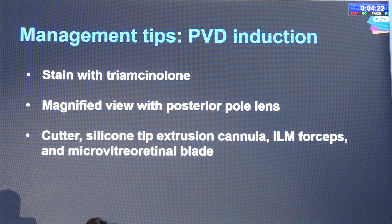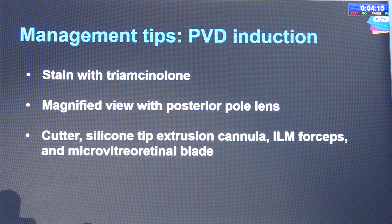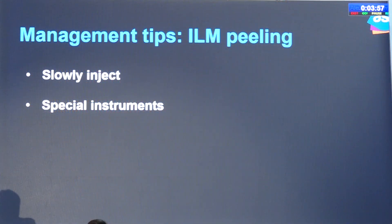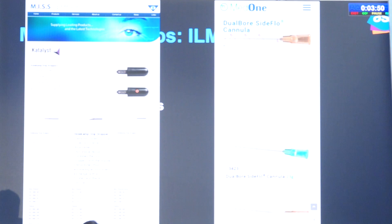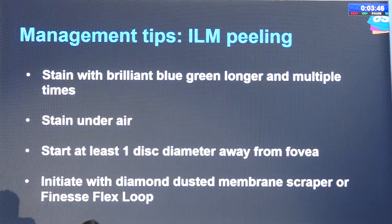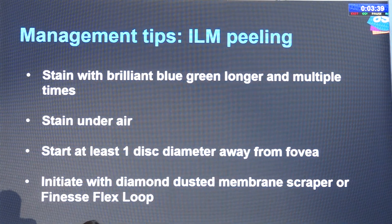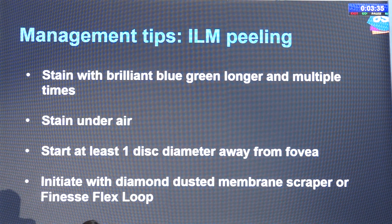For PVD induction, triamcinolone staining is needed and vitreoschisis might be present, so you might need to repeat the staining. I do it with an irrigated contact lens, magnified for posterior view. Sometimes silicone tube extrusion of the cannula, internal limiting membrane forceps, or an MVR blade may be needed to initiate PVD. During injection of the dye, there might be retinal damage, so inject slowly — special instruments including drip droppers and dual-bore cannulas are available. These cases need staining and it needs to be kept longer because the macula may be very depigmented; if we do not stain, it will not be visible. Sometimes we can stain under air.